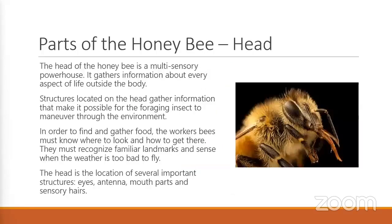Let's get started with the most important part of the honeybee. So you've got one in front of you — take a look at her head. It's not that big, but it is the powerhouse of the honeybee, very similar to you and I. That's where her brain is, that's where her eyes are, that's where her antennae are. Every aspect of life outside of the body comes from this — the structures located here make everything possible for the bee to do anything.